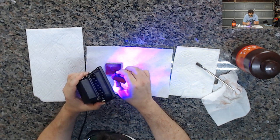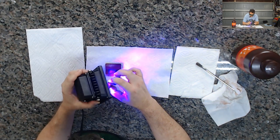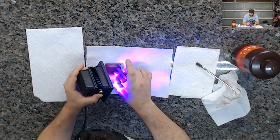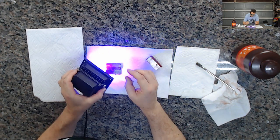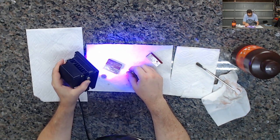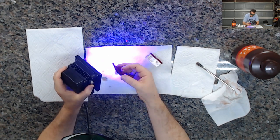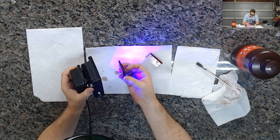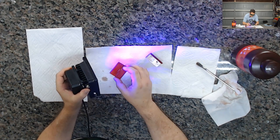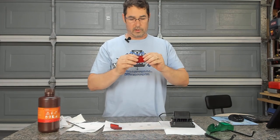And this other piece here that we did, we're just going to hit that with UV for a few seconds. And I can probably pick it up and flip it over and do the other side. There you go. And there we have it. The pieces are now resin welded together. They are fairly strong.